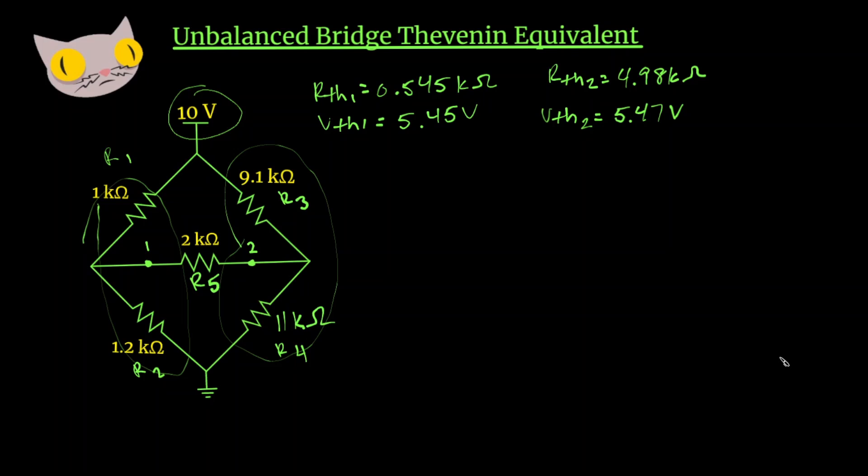Now that we have our values, let's construct the equivalent circuit. For the equivalent circuit, we have two voltage sources. We have 5.45 volts on this side and 5.47 volts on that side. Then we have our Rth1, our first resistor.